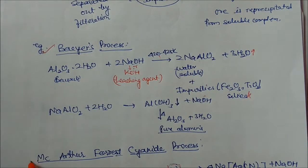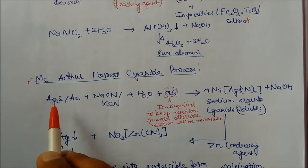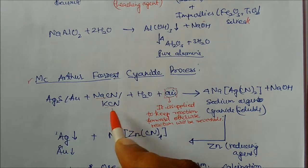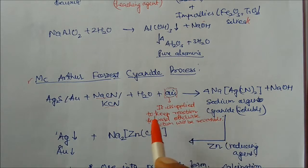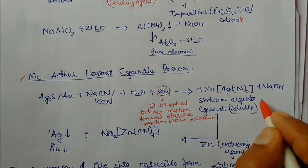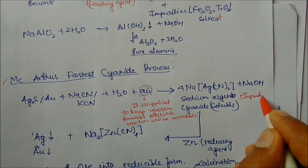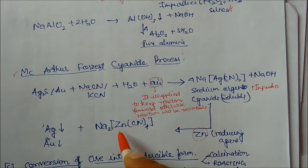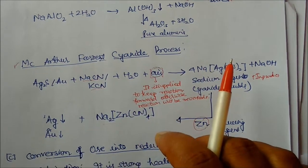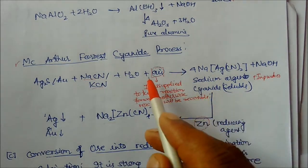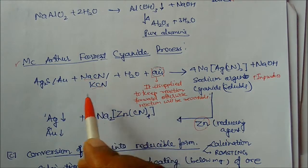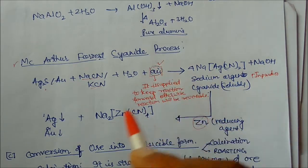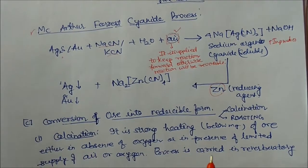Another leaching process is the MacArthur-Forrest cyanide process, used for silver and gold ores like silver sulfide. The ore reacts with a leaching agent — sodium cyanide or potassium cyanide — along with water and air to form a soluble complex while impurities separate out. A reducing agent then reacts with the complex to precipitate out silver and gold. Air supply is very important because without air, silver sulfide and sodium cyanide react reversibly; supplying air drives the reaction forward to form the complex.